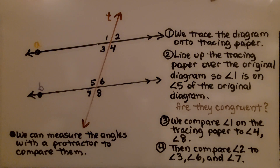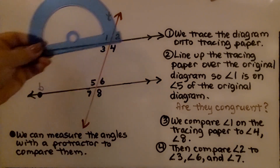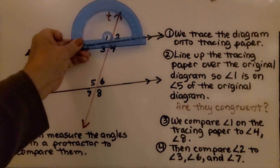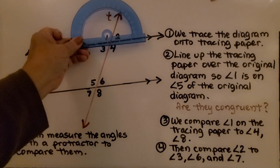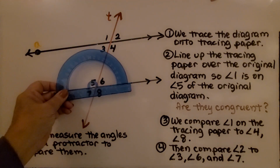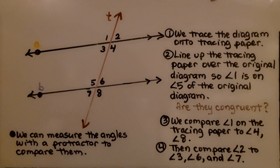We can also measure the angles with a protractor to compare them. We can measure angle one with a protractor and then compare it to angle five to see if it's the same, and do the same with the other angle measures.